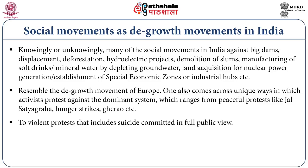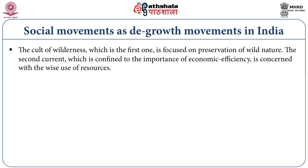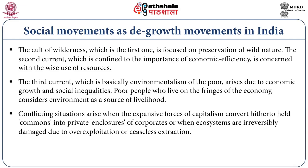In the book The Environmentalism of Poor – A Study of Ecological Conflicts and Valuation, Joan Martinez-Elier says that there are chiefly three currents of environmental activism. The first is the cult of wilderness, focused on preservation of wild nature. The second is concerned with the wise use of resources and the importance of economic efficiency. The third current, basically the environmentalism of the poor, arises due to economic growth and social inequalities. Poor people who live on the fringes of the economy consider the environment as a resource of livelihood. Conflicting situations arise when the expansive forces of capitalists convert hitherto held commons into private enclosures of corporates, or when ecosystems are irreversibly damaged due to over-exploitation or ceaseless extraction.